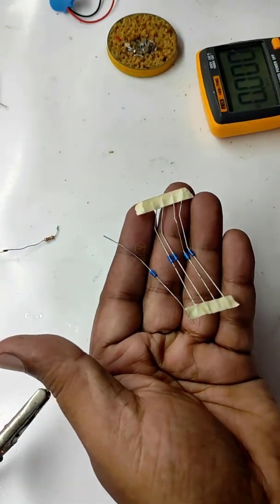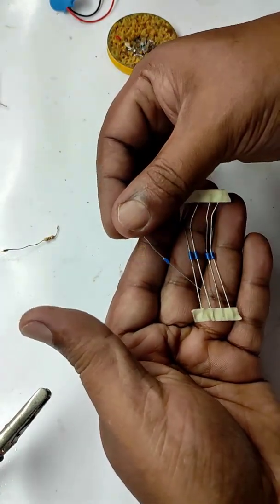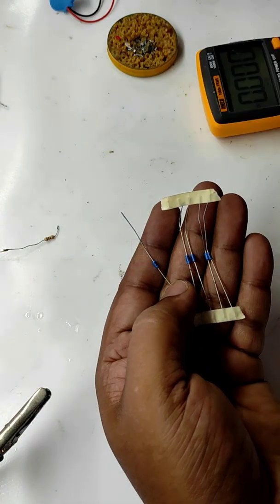This is similar to zener diode and has no polarity. The breakdown voltage range of DB3 is 28 to 35 volts.